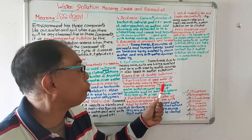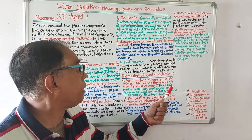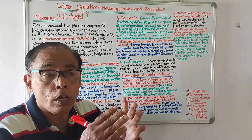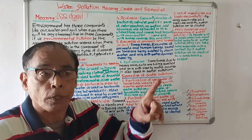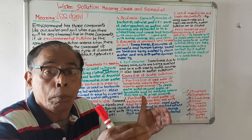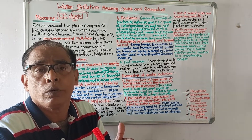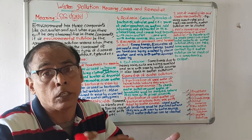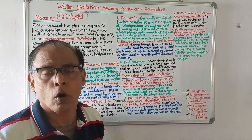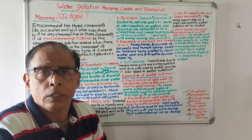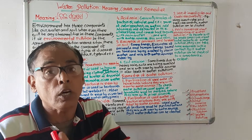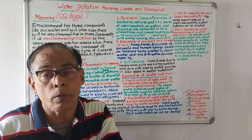One control measure for water pollution is the purification of used water from households before they mix with nearby water sources. We all have to think about and act on water conservation and purification.